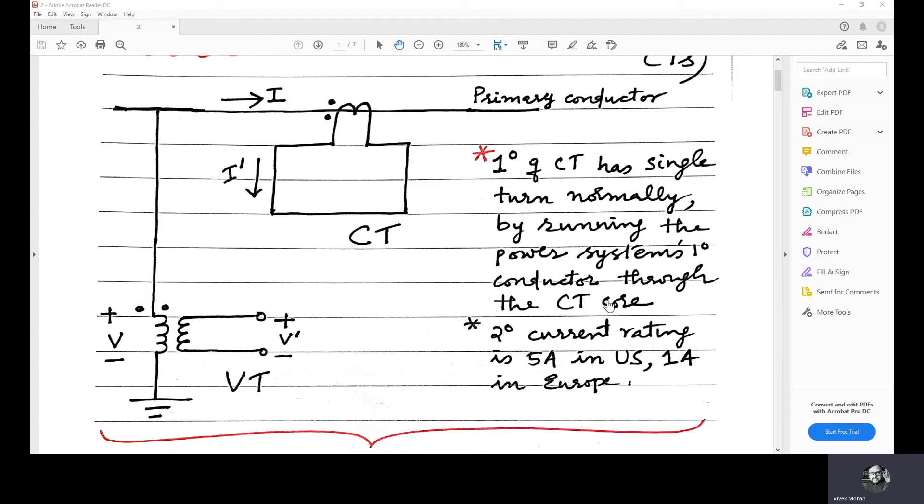Now, the range for current transformer is 5 amperes to 1 ampere. And for the potential transformer, it is normally 110 volts. The transformation ratio N1 by N2 is high for a current transformer. And for a potential transformer, the N1 by N2 ratio is low.